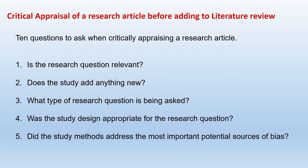Fifth: Did the study methods address the most important potential sources of bias? There are so many biases when doing research, such as selection bias, information bias, and recall bias. These are all main biases in conducting research. If you are doing a systematic review, there will be publication bias — the author may be choosing only those articles which have a positive finding. So you have to check whether all these biases are addressed when including research in a literature review.